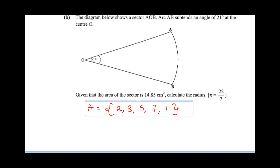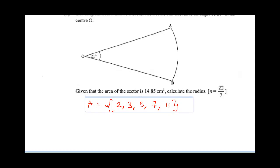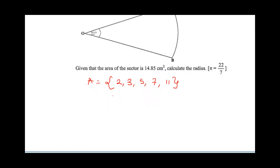Part B of the question says, the diagram below shows a sector AOB. Arc AB subtends an angle 21 degrees at the center. Given that the area of the sector is 14.85, calculate the radius. We've been given the area of this sector. One thing you need to know is the formula of area of sector. The formula for the area of the sector is given as theta over 360 multiplied by pi r squared.